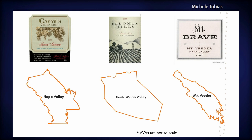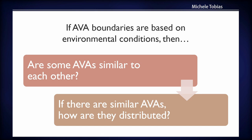These labels relate to an actual geographic area — they're not to scale in my slide, but the words on the labels correspond to real geographic regions. The question I wanted to answer is: if AVA boundaries are based on environmental conditions — and when you submit a petition it needs to relate to unique environmental characteristics — then are some AVAs similar to each other?